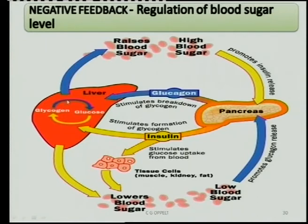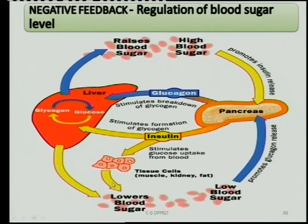When the blood sugar level becomes too low — because your body uses up sugar all the time — the glycogen stored in the liver and muscle cells must be converted back into glucose, which raises the blood sugar level again. The hormone responsible for converting glycogen back into glucose is glucagon.